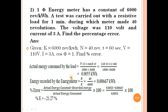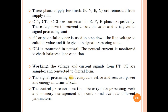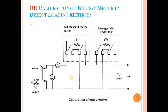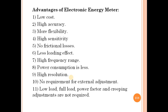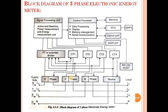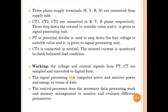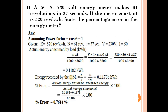So my dear students, we have discussed about the calibration of energimeter by direct loading method in the last lecture. Then we have also discussed about the different types of errors which are taking place in the single-phase electronic energimeter. Then we have discussed about the advantages of electronic energimeter, and last we have discussed about the three-phase electronic energy meter, its construction and working. So now in today's lecture we are going to solve some examples on energimeter constant and find the errors.